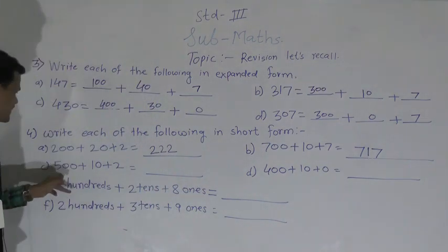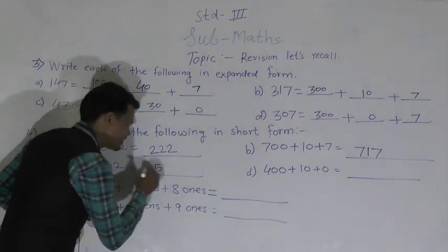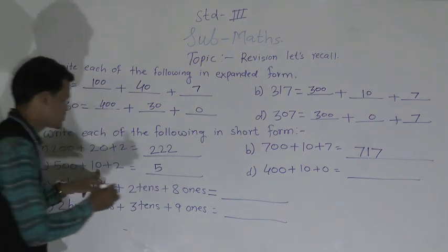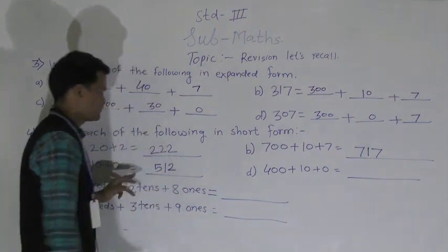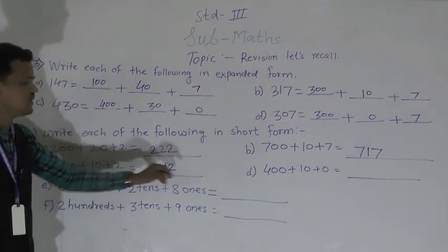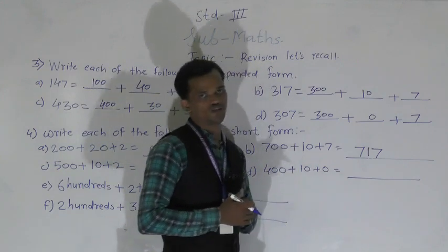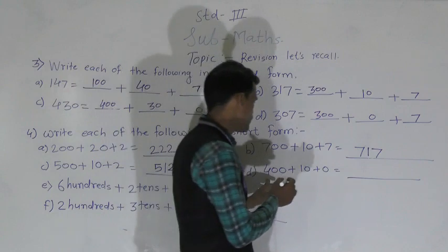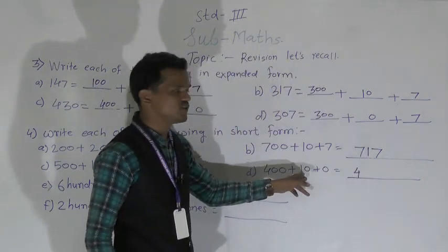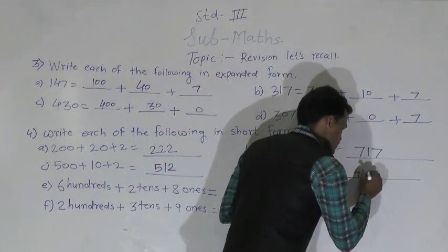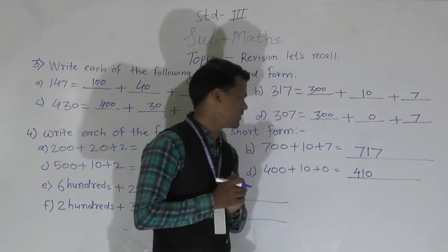Next: 500 + 10 + 2. Write 5 at the hundreds place, 1 at the tens place, and 2 at the ones place. So 512 is formed. Then: 400 + 10 + 0. Write 4 at the hundreds place, 1 at the tens place, and 0 at the ones place. So 410 is formed.